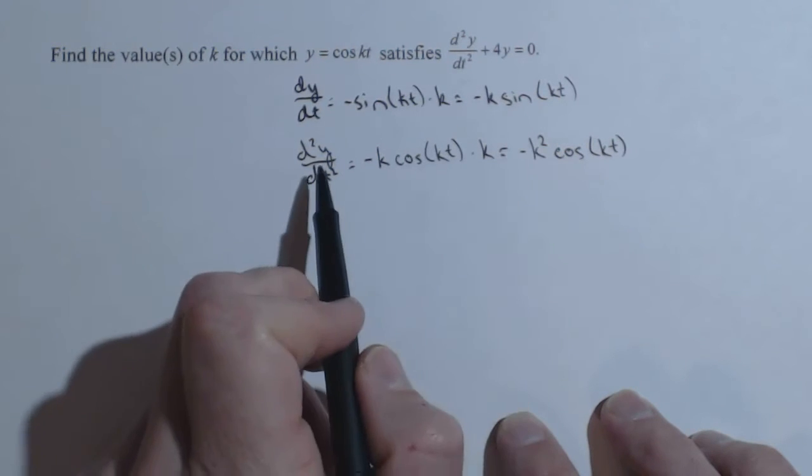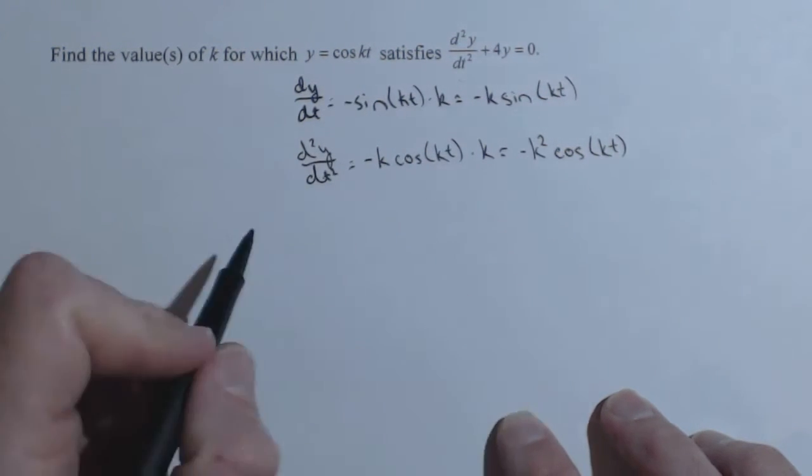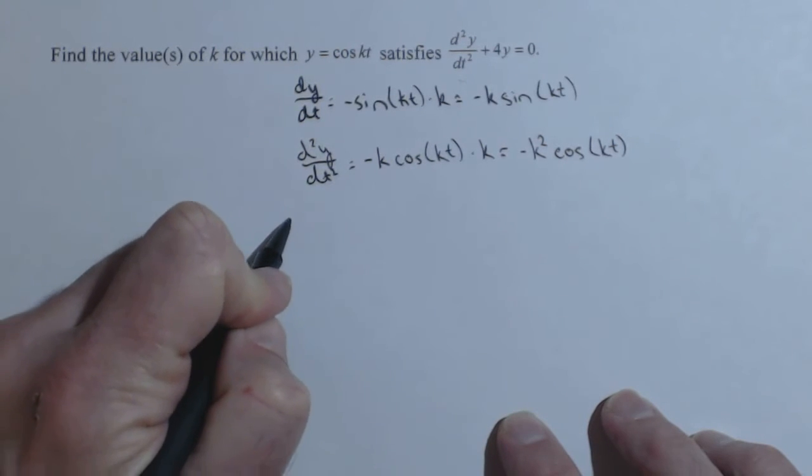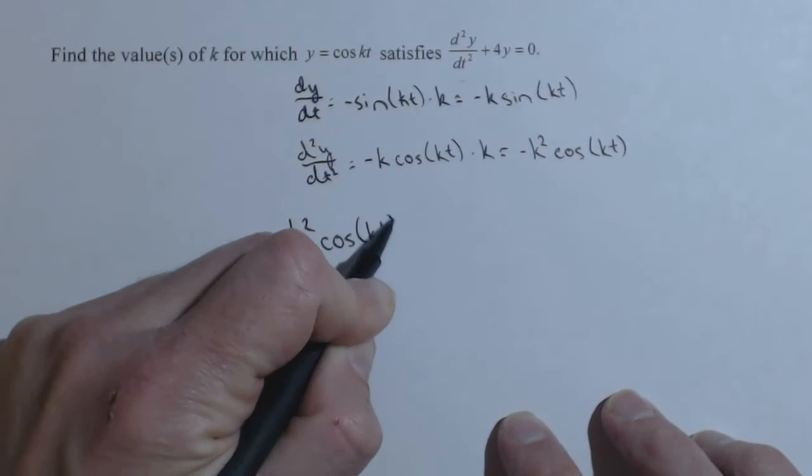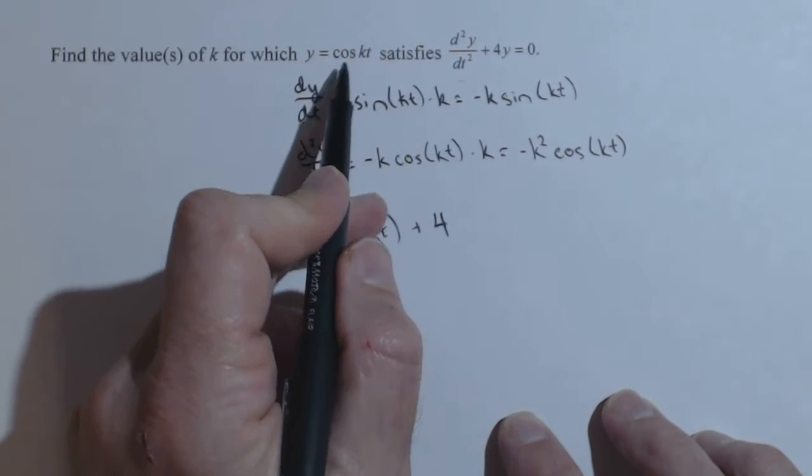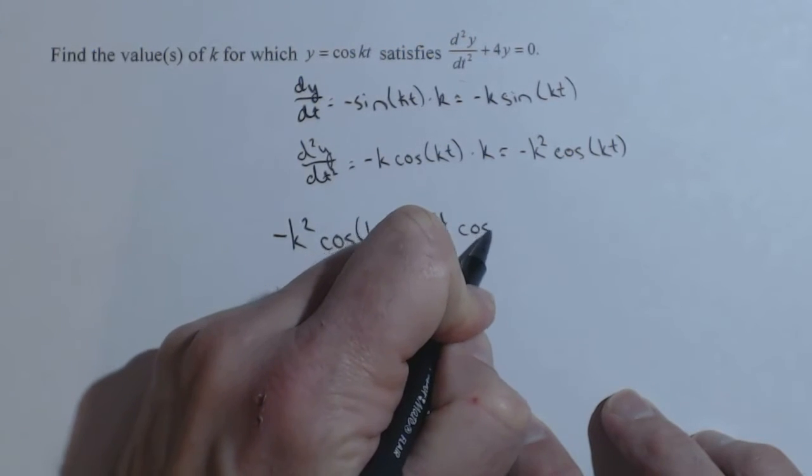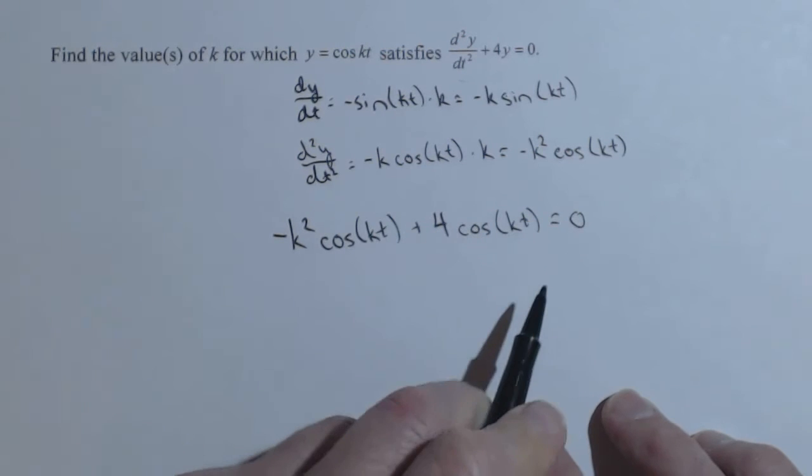So we're going to sub these in, so we have our second derivative here. We already knew what y was. So plugging these in, we get negative k squared cosine of kt plus 4 times what y was, which was cosine of kt equals 0.